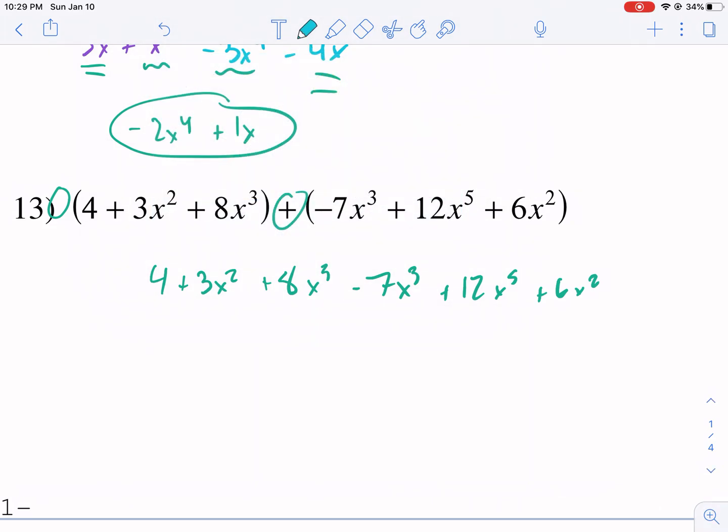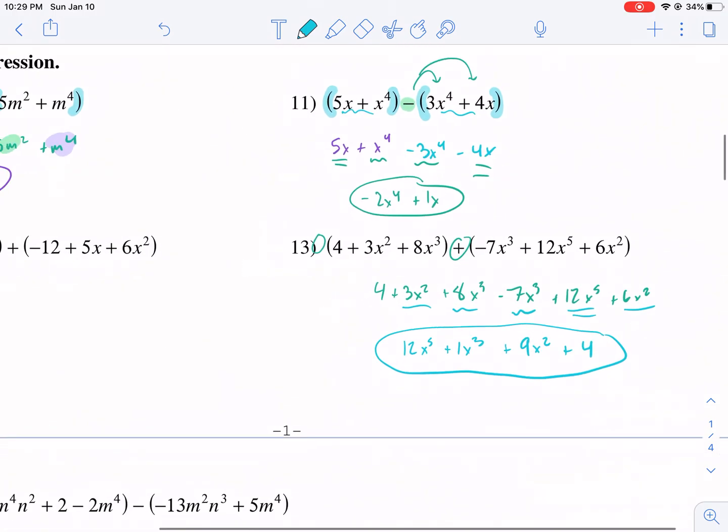So then I need to do highest degree first. So I'm going to do negative 3x to the fourth plus x to the fourth will give me negative 2x to the fourth. Five x minus four x gives me positive one x. And I'm done. That's all there is to it. If you want to do a tougher example like this, both of these are not bad. We can essentially eliminate the parentheses because there's nothing that modifies it.